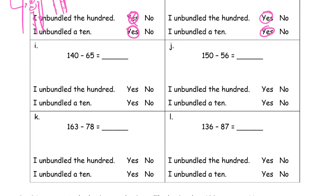For 140 minus 65: anytime you have a 0 in the ones place of your minuend, you automatically have to unbundle tens because you have no ones to subtract. You need to cross out 5 ones and have none, so unbundle a 10. You'll also have to unbundle the 100 because you need 6 tens and only have 4. So you unbundle both. To solve: take 65 from 100, leaving 35, plus the 40, giving you 75.